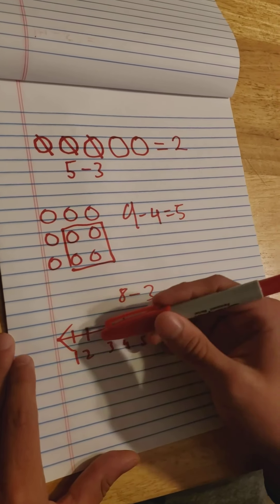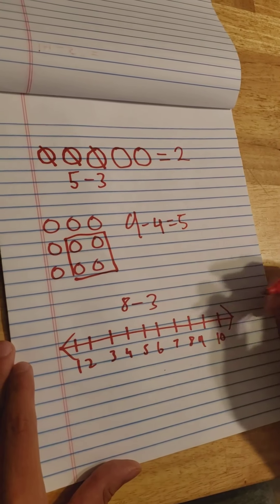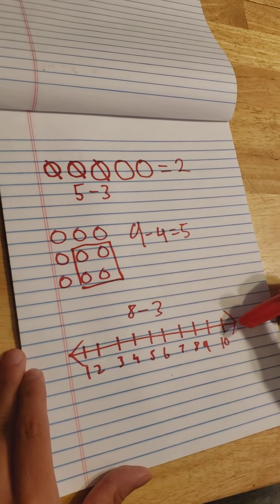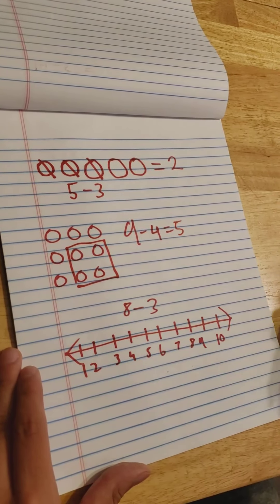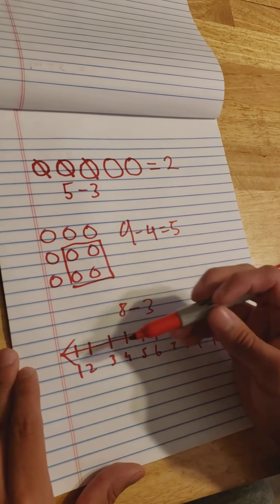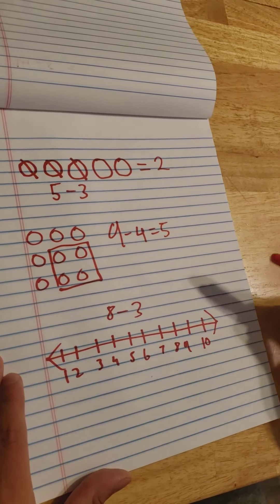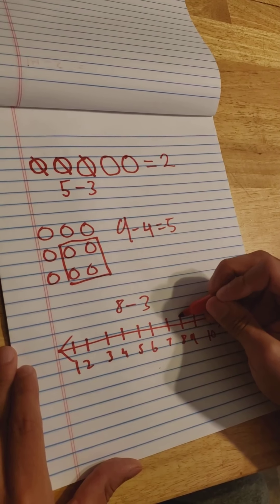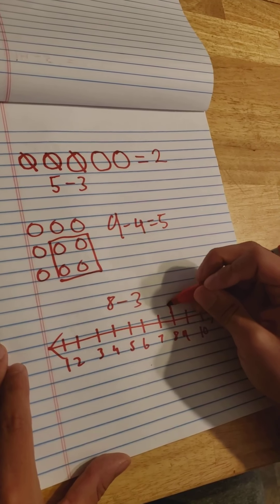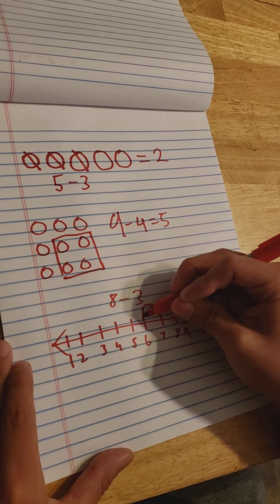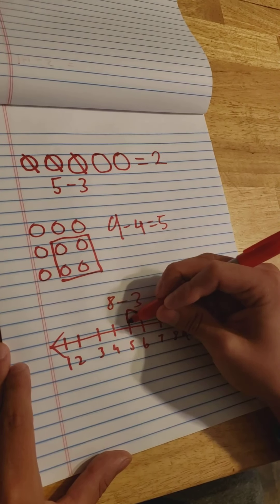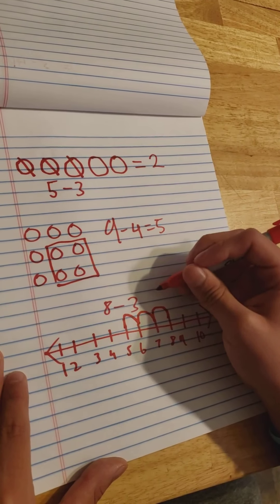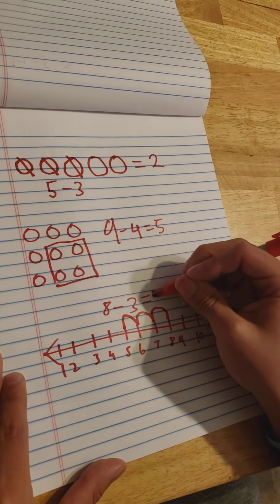Now we're going to do a number line. If you're not familiar with a number line, usually it goes from 1 through 10 or you can stretch it out as long as you need it to be. Today we're going to do the problem 8 minus 3. So we start from 8 and we would come over 3 spaces. That's 1, 2, 3, and it landed on 5. Therefore we know that 8 minus 3 equals 5.